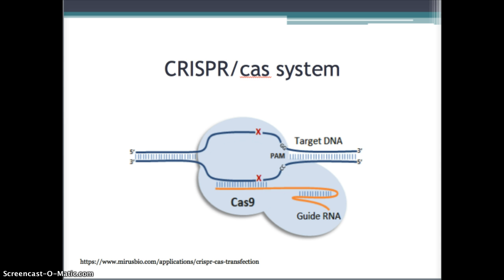The most recent genome editing technique is the CRISPR-Cas system. CRISPR is an acronym for Clustered Regularly Interspaced Short Palindromic Repeats, and Cas is the name of the protein enzyme used to cut the DNA. Unlike ZFNs and TALENs, CRISPR is not human-made. It is based off the prokaryotic immune system that provides a resistance to foreign genetic elements such as plasmids and viruses.